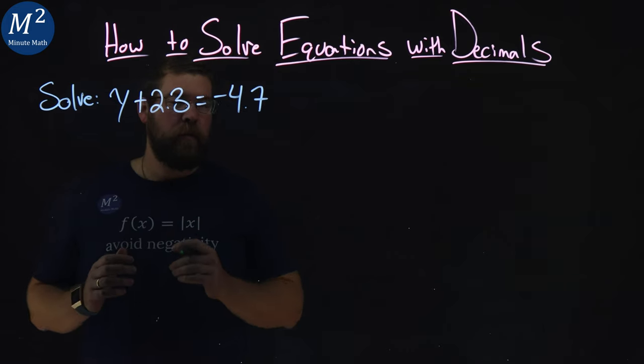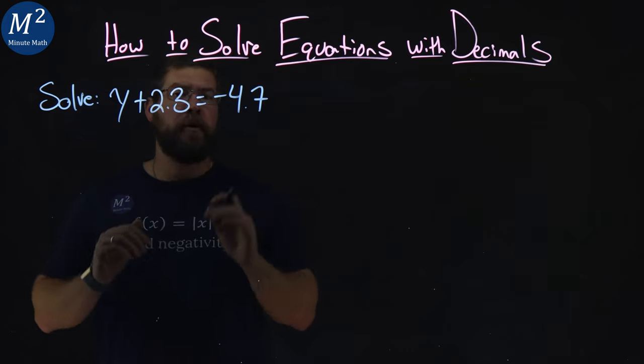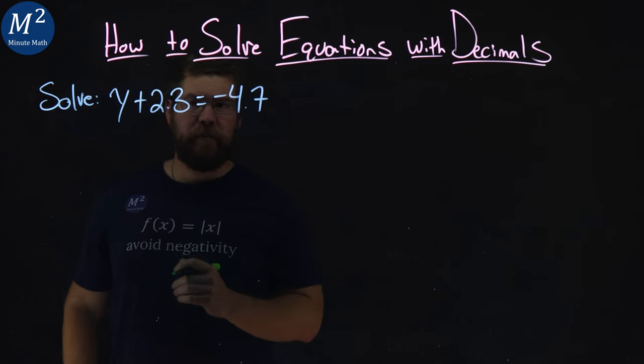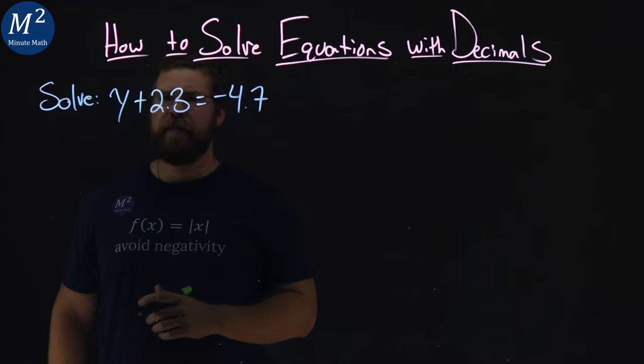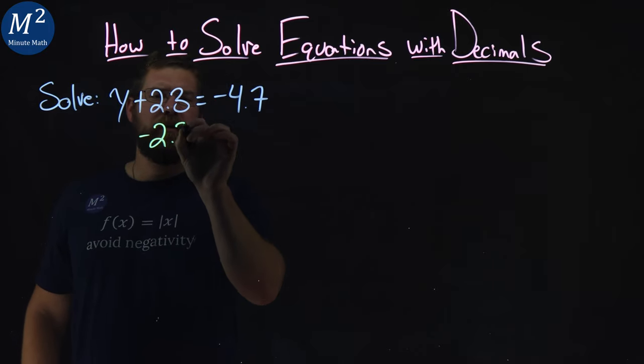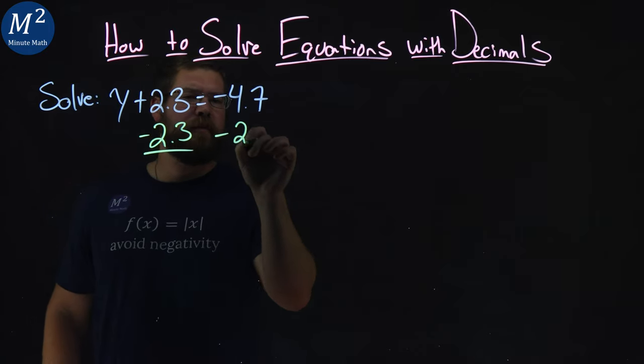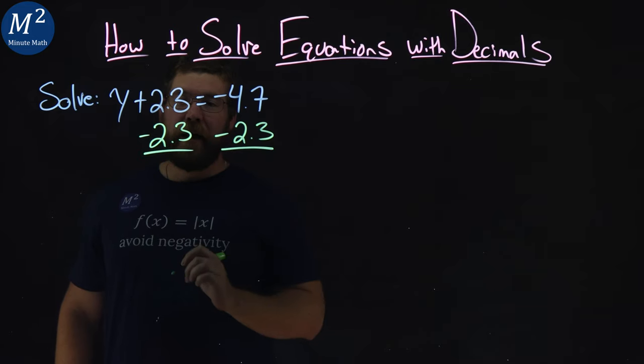The subtraction property of equality states that I can subtract a number to both sides of the equation if it's the same number. I want to eliminate that 2.3. So if I subtract 2.3 to both sides right here, what do I have left?